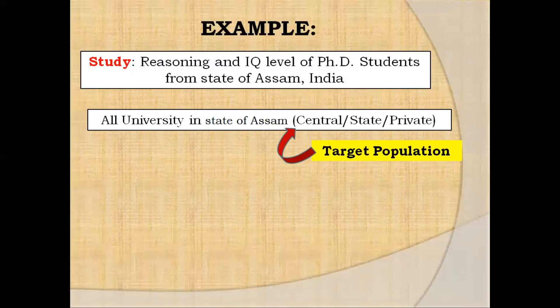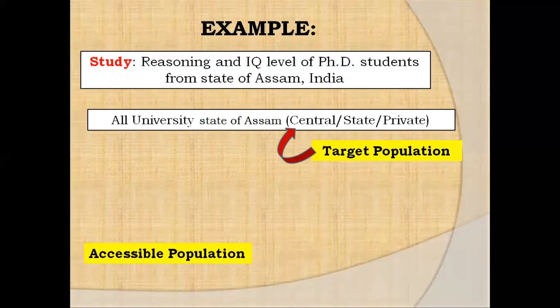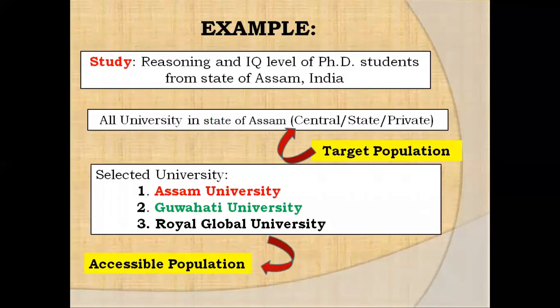So for this study, the target population will be the universities present in the state of Assam. Now, from all those universities, let's say three were selected: Assam University, Gauhati University, and Royal Global University. These three universities selected from the target population would represent the accessible population. I hope this example helps clarify the difference between target population and accessible population.